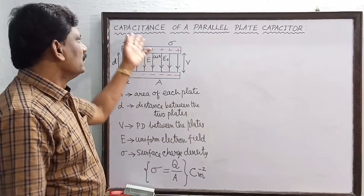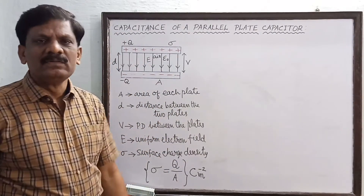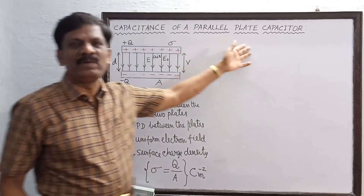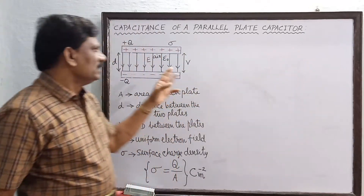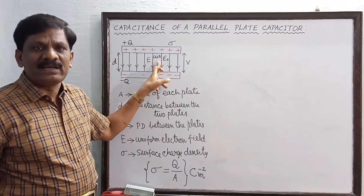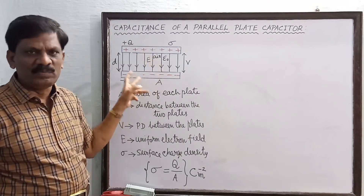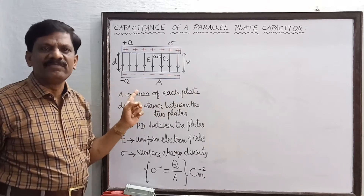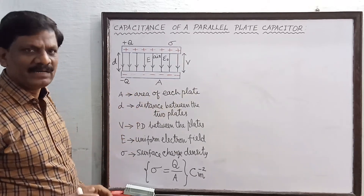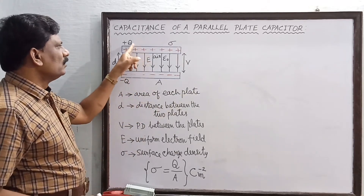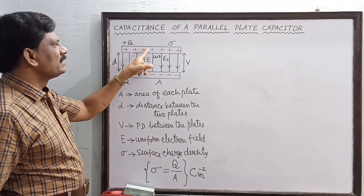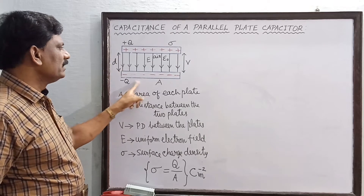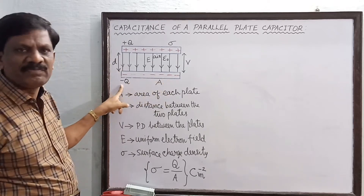We are going to derive an expression for the capacitance of a parallel plate capacitor with air as the medium between the two plates. This arrangement consists of two parallel metal plates — the top metal plate is provided with positive charges +q and the bottom plate has a charge of -q.